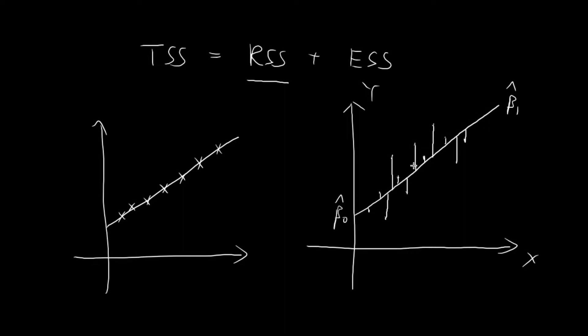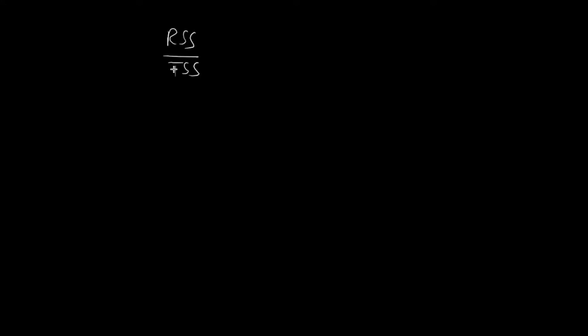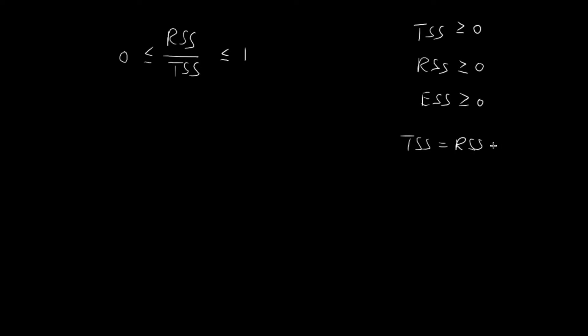Now I'm going to define a new number that is going to help us with interpreting how well this line fits the data. The term I'm going to define is RSS divided by TSS. First of all, notice that this term is always larger than or equal to 0, because individually TSS, RSS, and ESS are all larger than or equal to 0 — they are all sums of squared terms, and squared terms are always non-negative. Second of all, this term is always smaller than or equal to 1, because TSS equals RSS plus ESS, and since both are non-negative, TSS must always be larger than or equal to RSS. So dividing RSS by TSS gives a number smaller than or equal to 1.